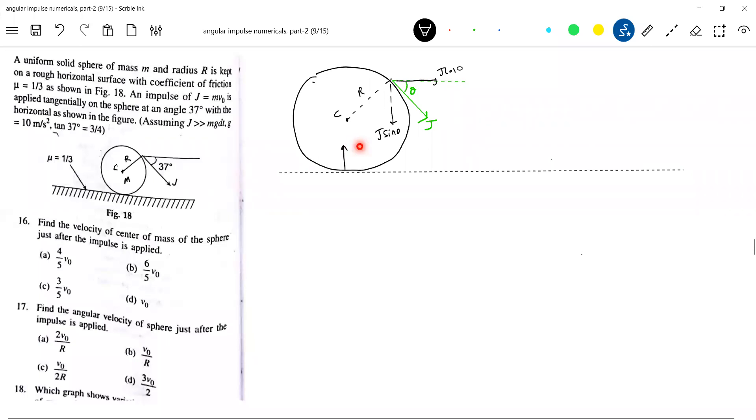So what is Jy? Jy is not greater than Mg times delta t. So the impulse acting is not sufficient to lift the sphere up from the ground.